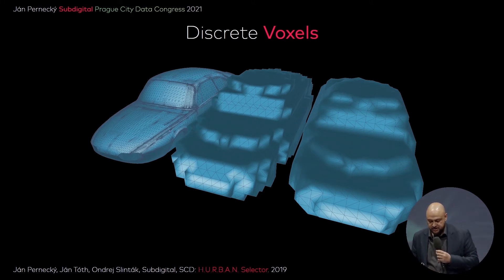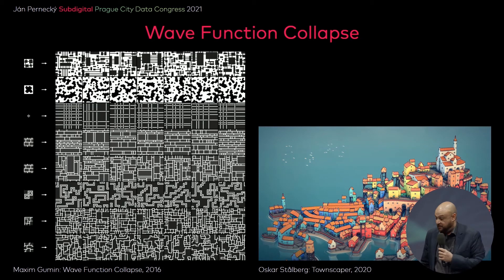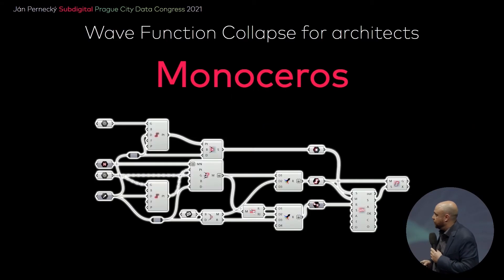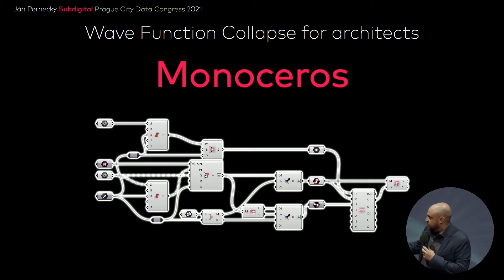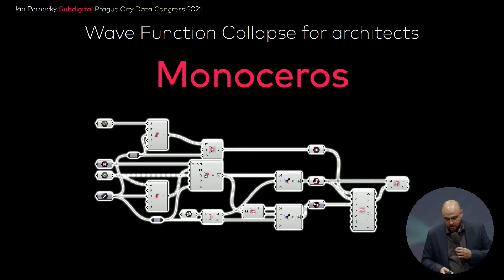There was an imbalance between the sophistication of the two methods, so more than a year ago we decided to come up with a more sophisticated way to materialize data. We found an existing algorithm used in computer game development called wave function collapse. We introduced a new tool for architects called Monoceros — an implementation in the well-known environment Grasshopper — so architects can now use wave function collapse for creative purposes.